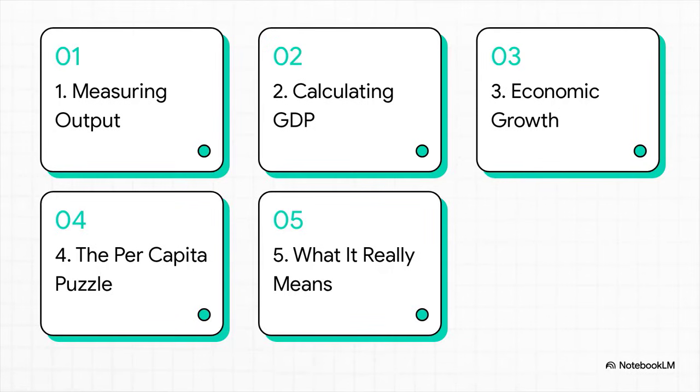So here's our game plan. First, we're going to build a tiny little economy right from scratch, just to see how it works. Then we'll figure out its GDP and see if it's growing. After that, we'll throw a curveball into the mix with something I'm calling the per capita puzzle. And finally, we'll connect it all back to what it means in the real world.